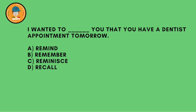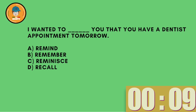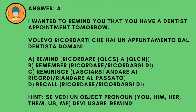Number three. I wanted to mmm you that you have a dentist appointment tomorrow. A: remind, B: remember, C: reminisce, D: recall. And the answer is A — I wanted to remind you — because remind is ricordare qualcosa a qualcuno. Remember is just ricordare. So if you see an object pronoun — remind you, remind him, remind her — you have to use remind, not remember.